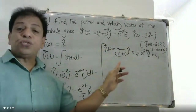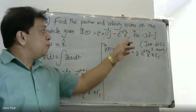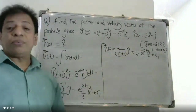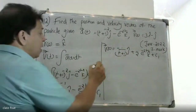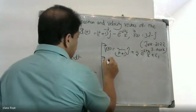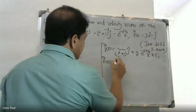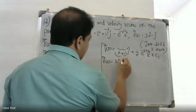To find C1, we apply the initial condition. v of 0 is equal to 3i minus j. Substituting t equals 0 into our expression, v of 0 is equal to 3i minus j.